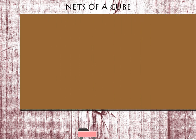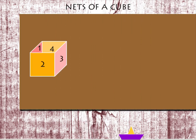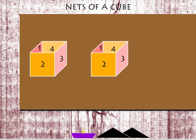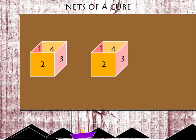Nets of a Cube. Here is a cube with an open top and bottom. It is made of 4 square sides: 1, 2, 3, 4.